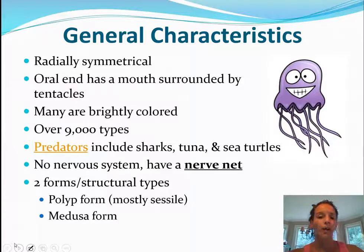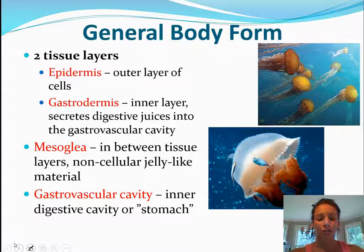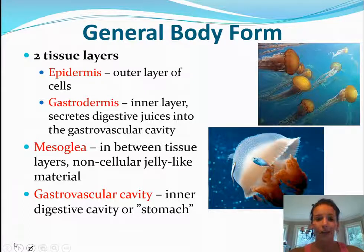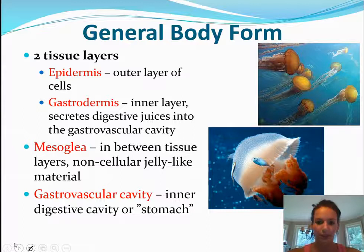The medusa form is what we commonly think of. So for general body forms, they have two tissue layers. Previously we've talked about the three different tissue layers typically found in vertebrates like us, but cnidarians only have two: the epidermis, which is the outer layer, and the gastrodermis, which is the inner layer. They also have some digestive juices but don't have fully separate digestive, reproductive, or respiratory systems — it's very, very basic.